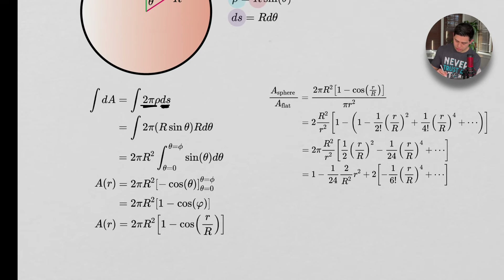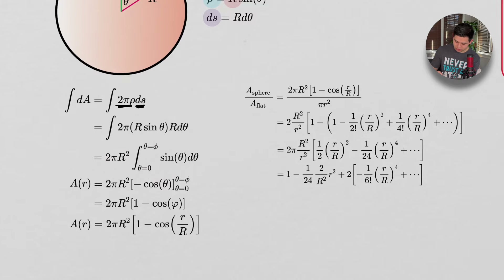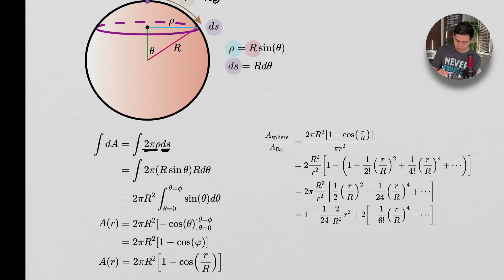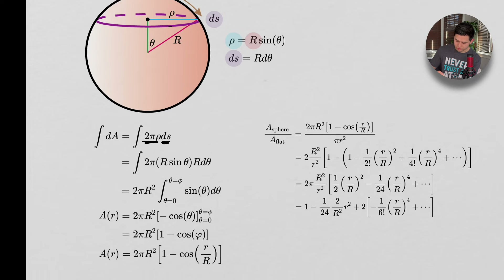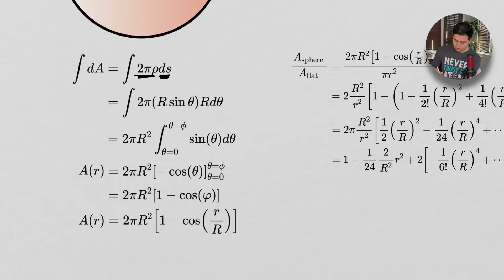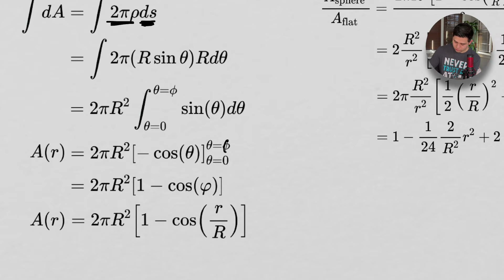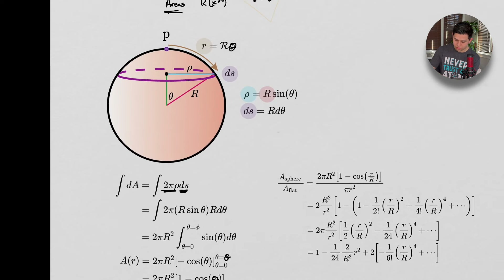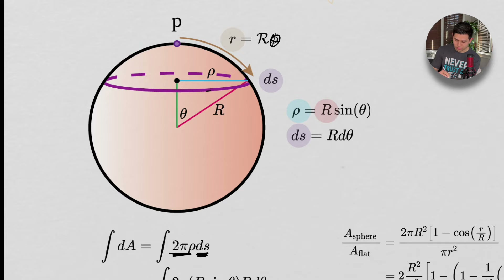Carrying out the integration, we end up with the area formula: A = 2π·r²·(1 − cos θ). This is the area of that spherical cap. We can then compare that area to the area of a flat circle at radius r.